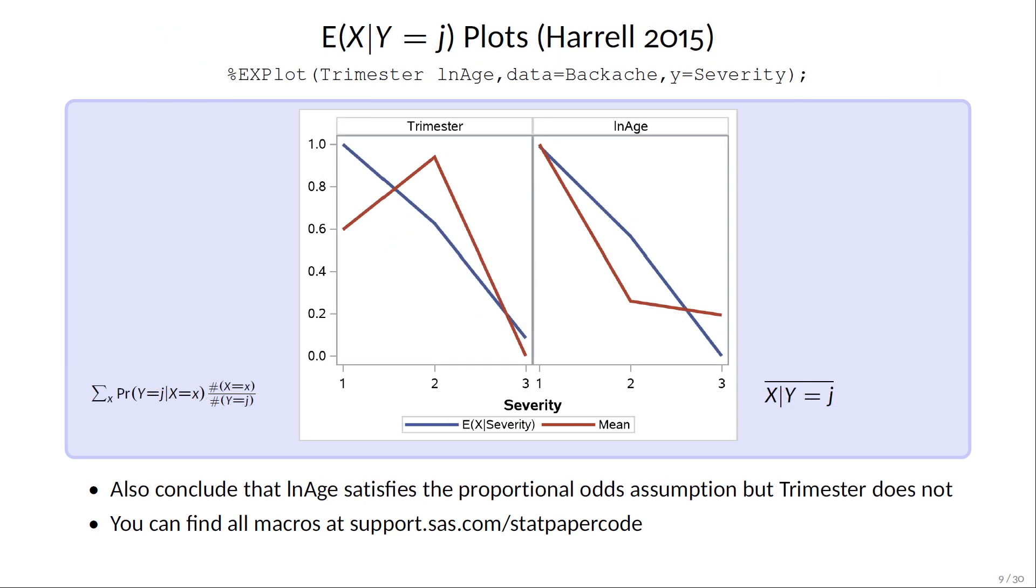Similarly, you can plot the expected value of each predictor against the response levels under a proportional odds model for each covariate individually, and compare that curve to the empirical means. If the proportional odds assumption is okay, then these should be somewhat parallel. Again, trimester really fails, but log age does not.